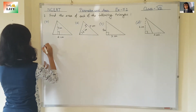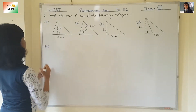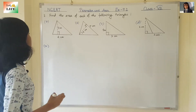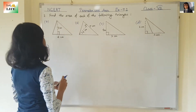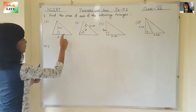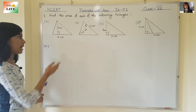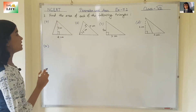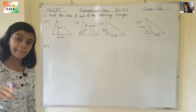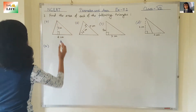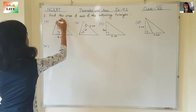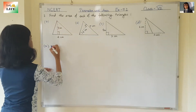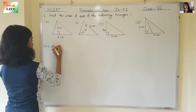Number one. This is the triangle. You can see this is the base and this is the height. The height of the triangle is always perpendicular to the base. This is the height and this is the base. So, area.